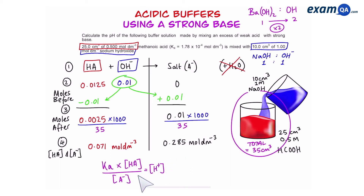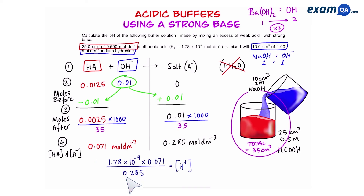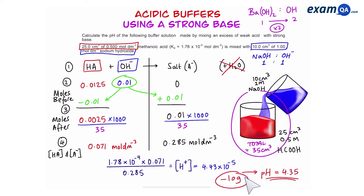Finally, we plug the values into the equation to work out the concentration of H⁺. We already know Ka because it's given in the question, and we now know the values of HA and A⁻. The value of hydrogen ions works out to be 4.43 × 10⁻⁵. Once you have this, all you have to do is take −log of it to get the pH. And there we go — we've worked out the pH of the buffer.